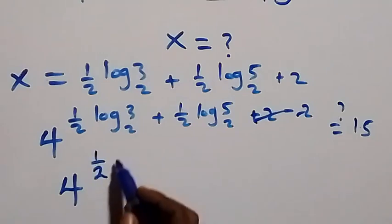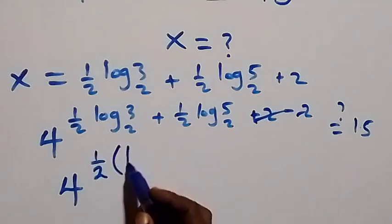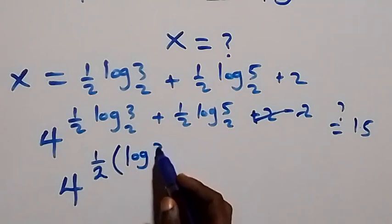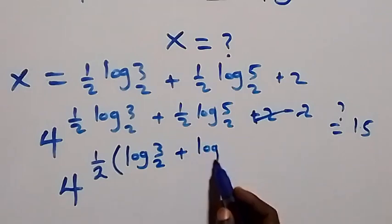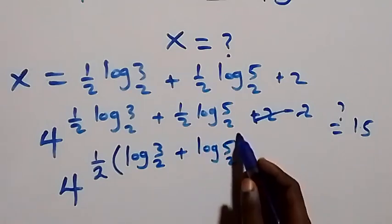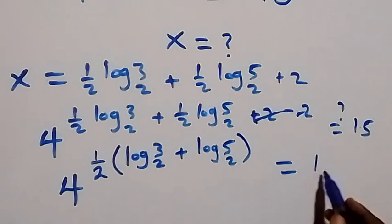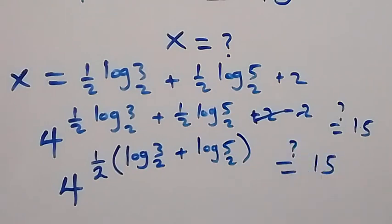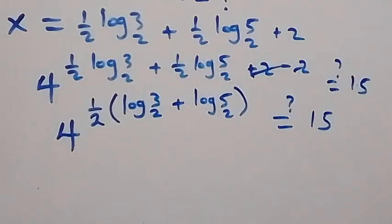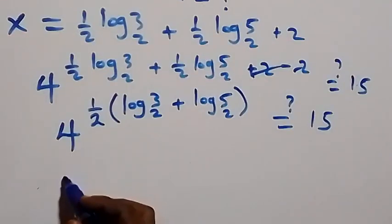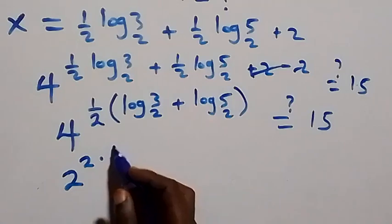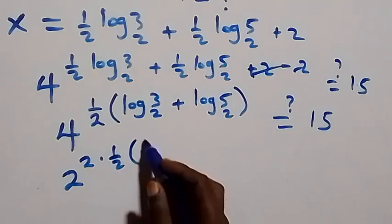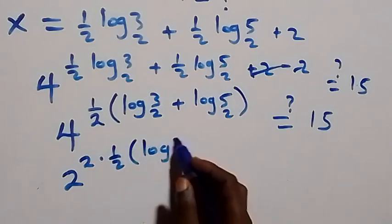From here, the plus 2 and minus 2 cancel out and we are left with 4 raised to power — since we have half, it implies half is common — so we have half into bracket log 3 base 2, then plus log 5 base 2. And is this equals to 15?